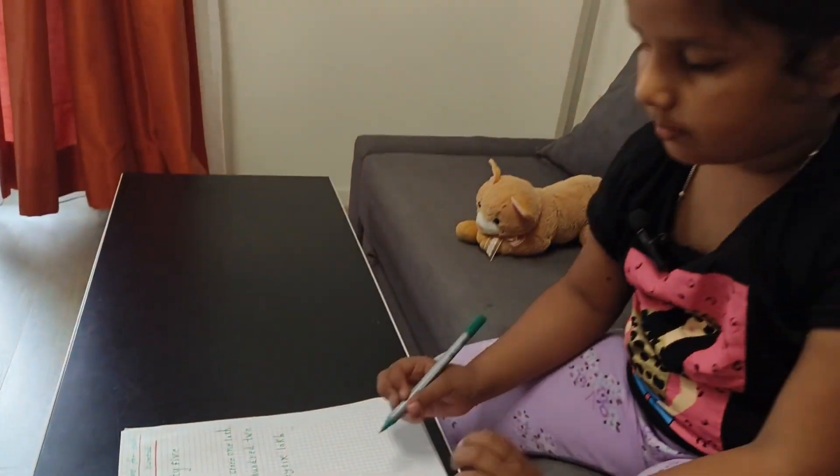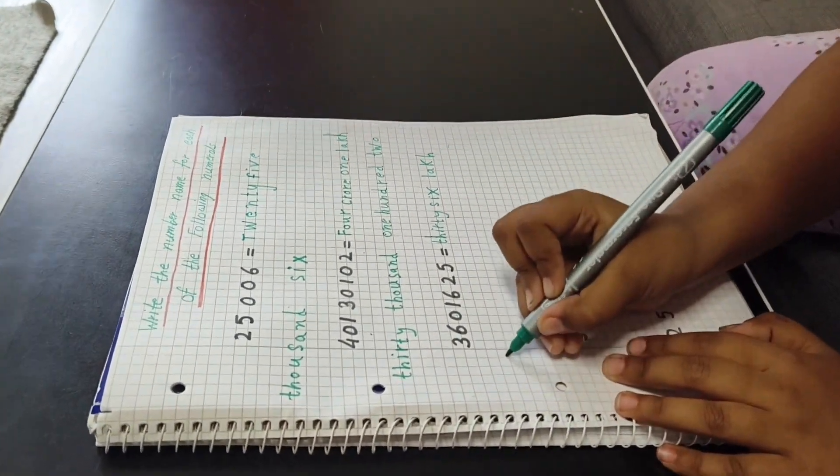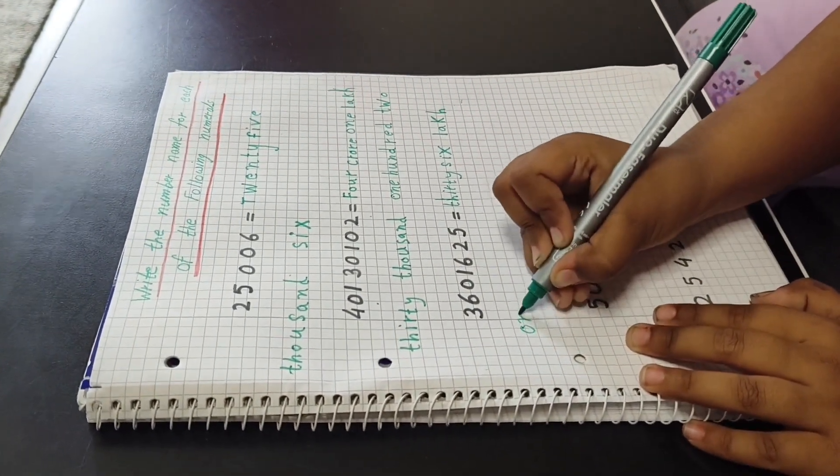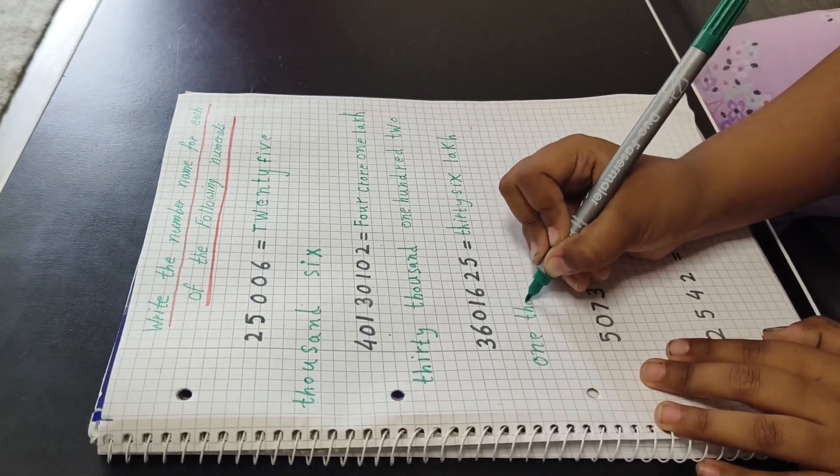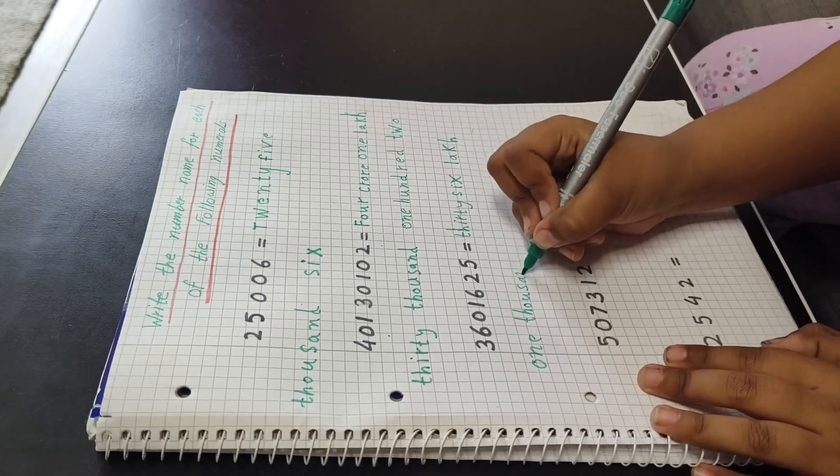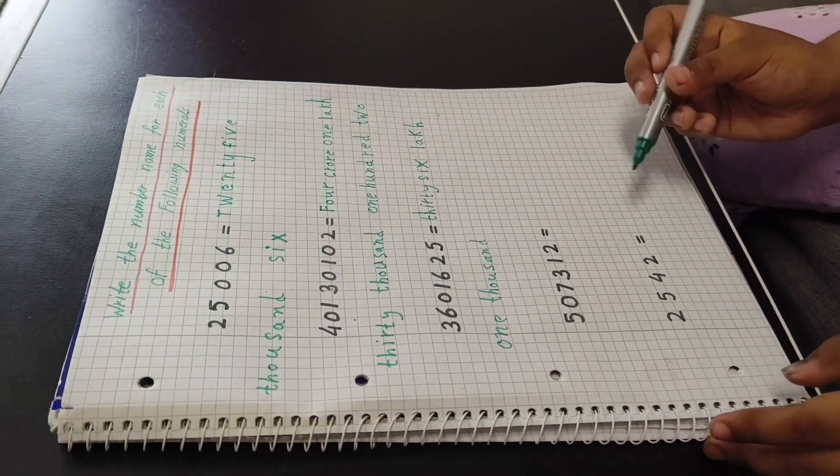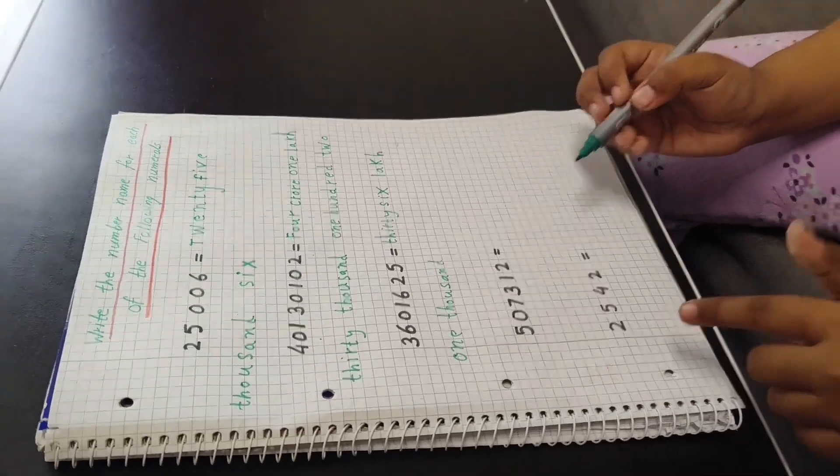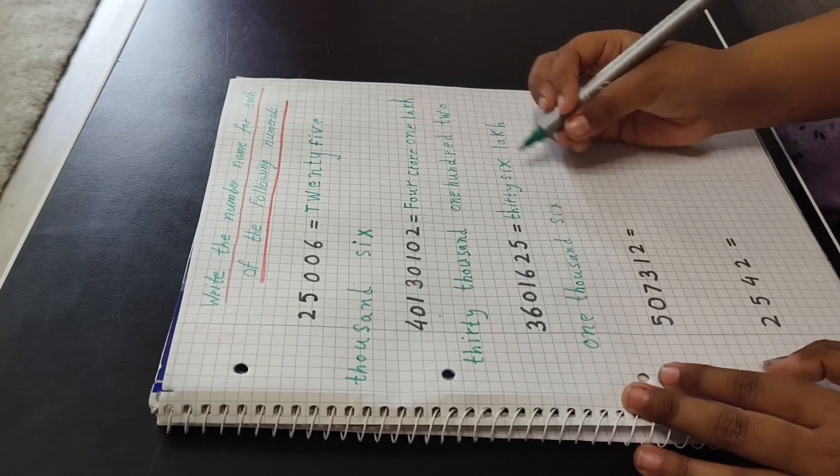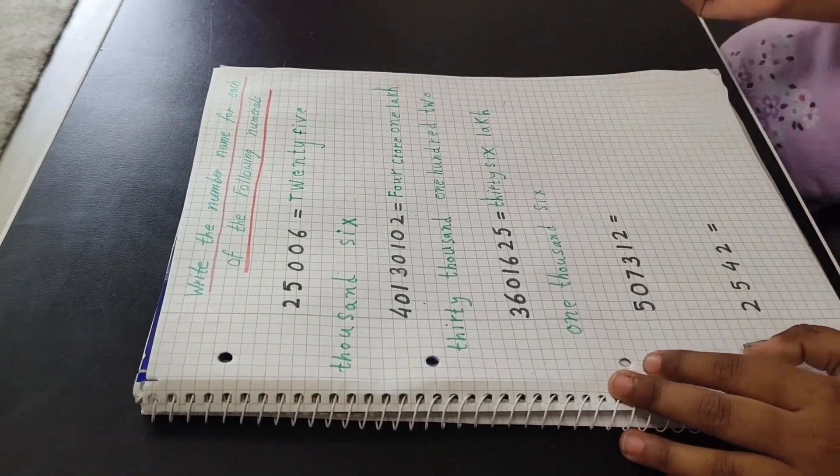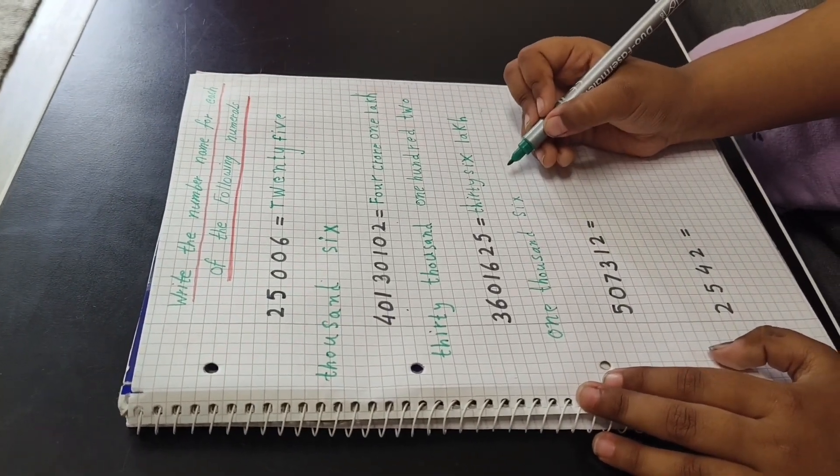Now I will count again. Ones, tens, hundreds, thousands. What can be? One thousand. Because here's nothing, so one thousand. O-N-E, T-H-O-U-S-A-N-D. One thousand.